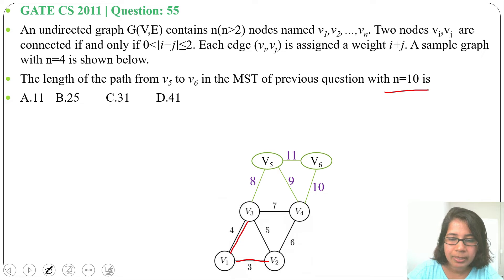As it is creating a cycle, we'll consider v2 to v4, weight 6. Next we'll skip v3 to v4 as it is creating a cycle. We'll include v3 to v5, weight 8. We'll skip weight 9.